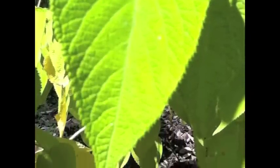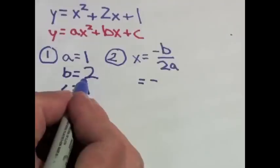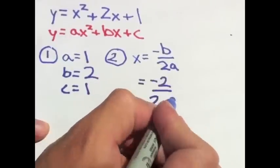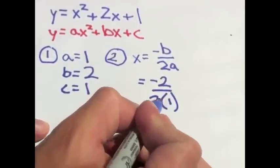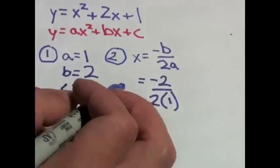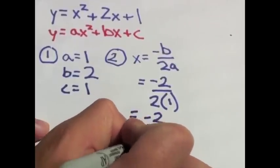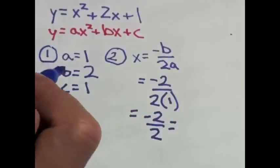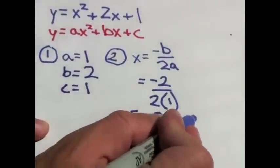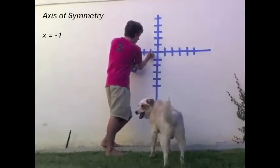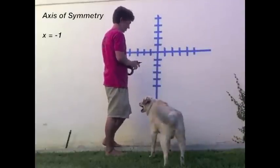Think of the axis of symmetry as a mirror projecting the same image on the other side. So, negative — now b is 2, so we're going to write negative 2 divided by 2 times a, which is 1. Now we're going to simplify this: negative 2 divided by 2 times 1 equals 2, and this is going to equal negative 1. So our axis of symmetry is at negative 1 on the x-axis.